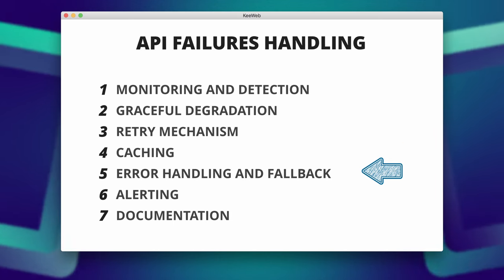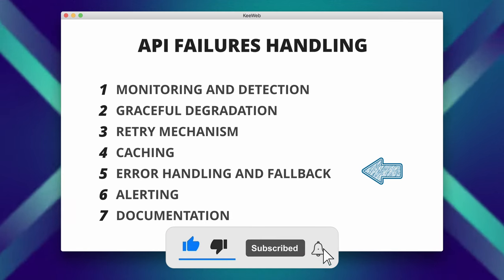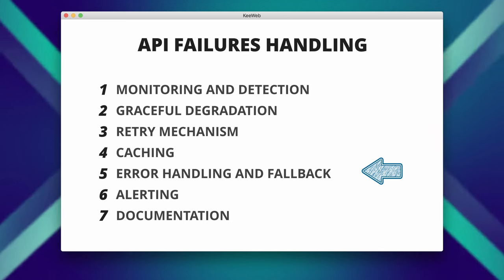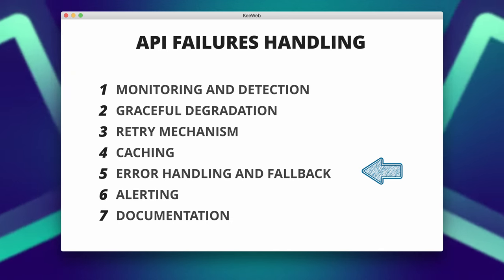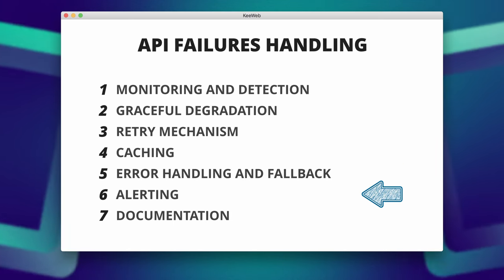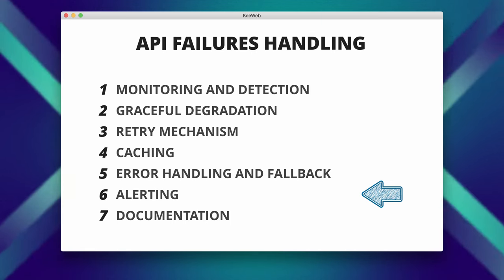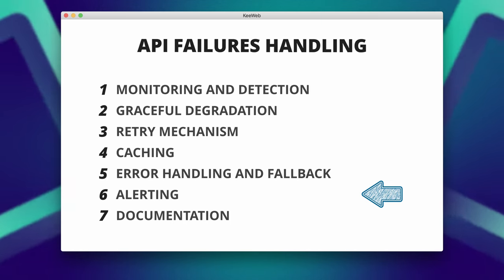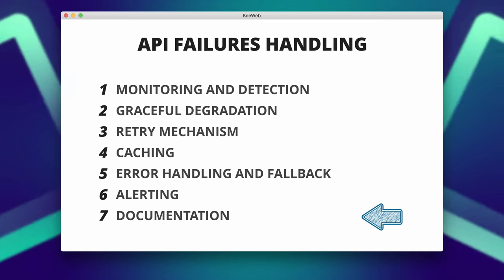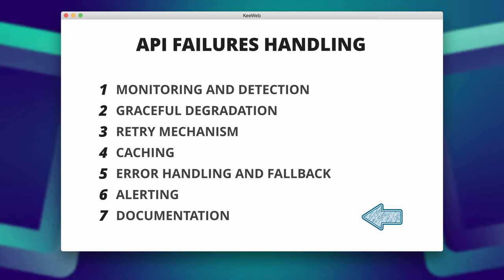Error handling and fallbacks: implement robust error handling strategies, provide informative error messages to users, and log errors for troubleshooting. Consider implementing fallback mechanisms or redundant APIs as backup options. Set up alarms to promptly notify system administrators or relevant stakeholders when the API fails or experiences prolonged downtime. Clearly document the dependencies on the API and how failures are handled in the system — this could be written in a runbook.